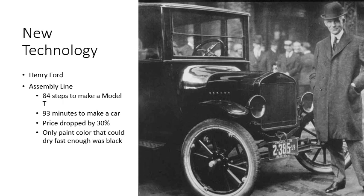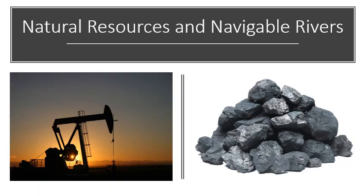The final advantage the United States had was natural resources — vast oil resources, coal, iron ore to make steel, and other materials to draw from the land to build industry. They also had navigable rivers such as the Mississippi, the Erie Canal, and the Hudson River. These rivers allowed goods to move back and forth easily, along with the growth of railroads.